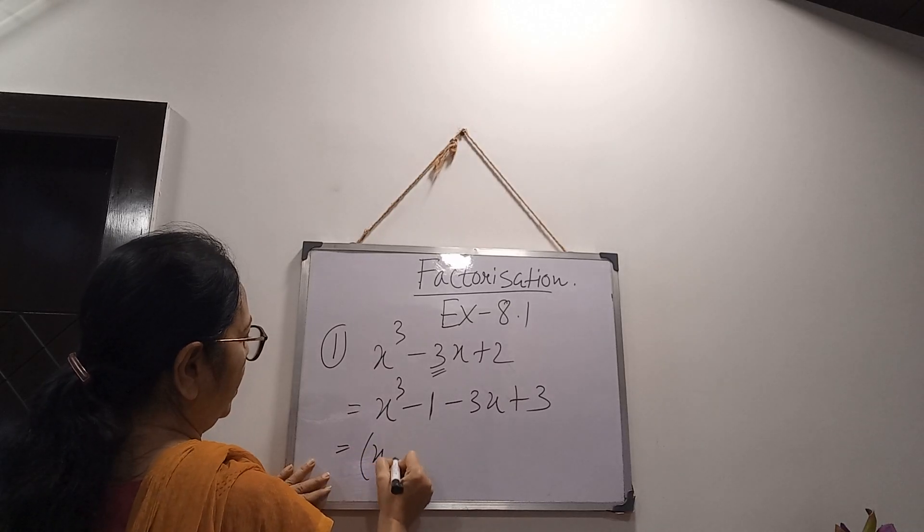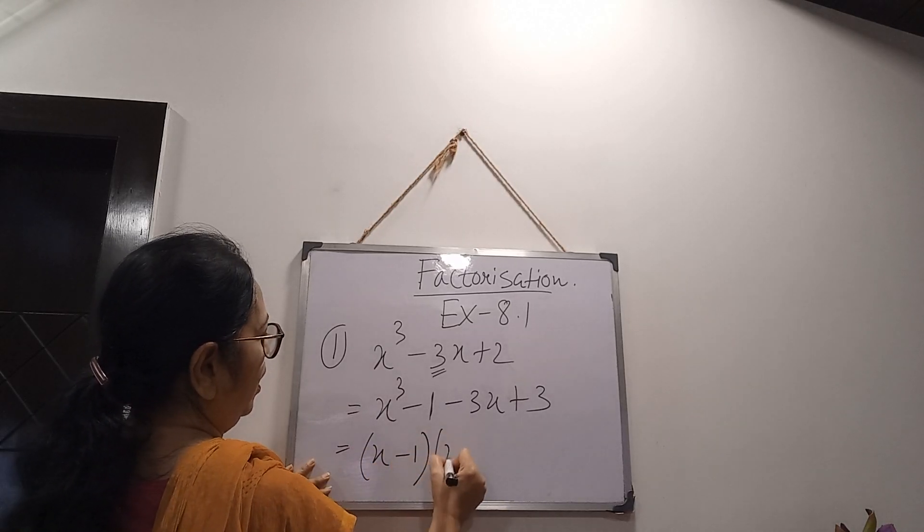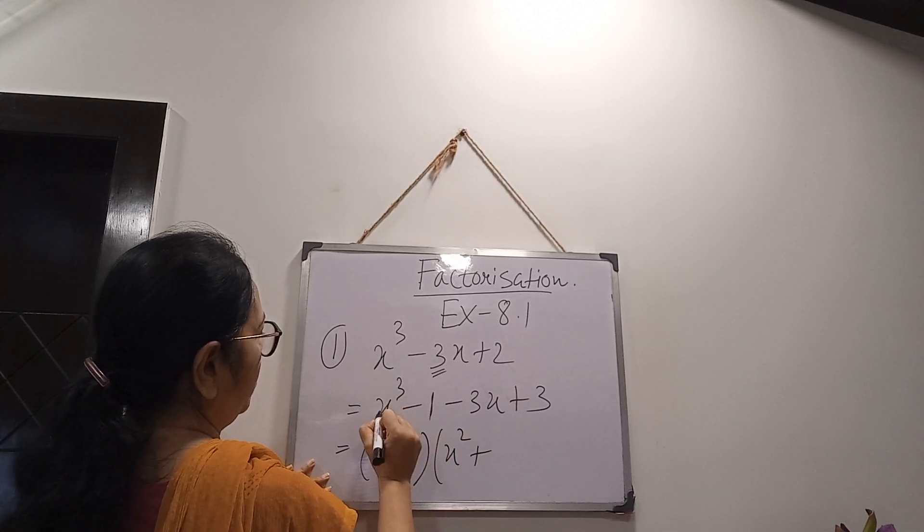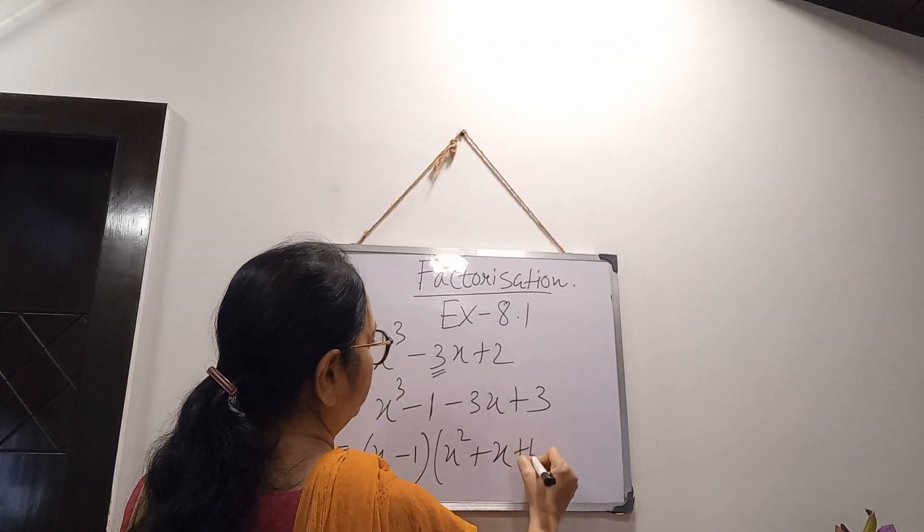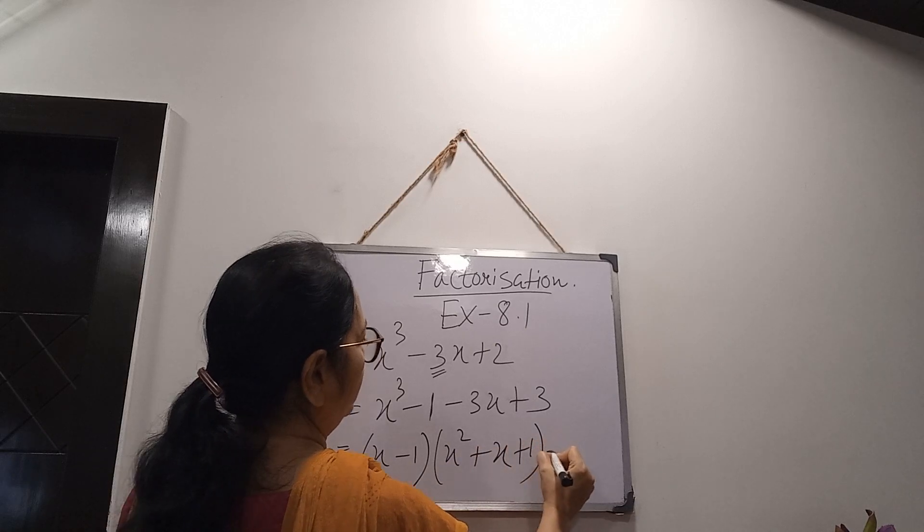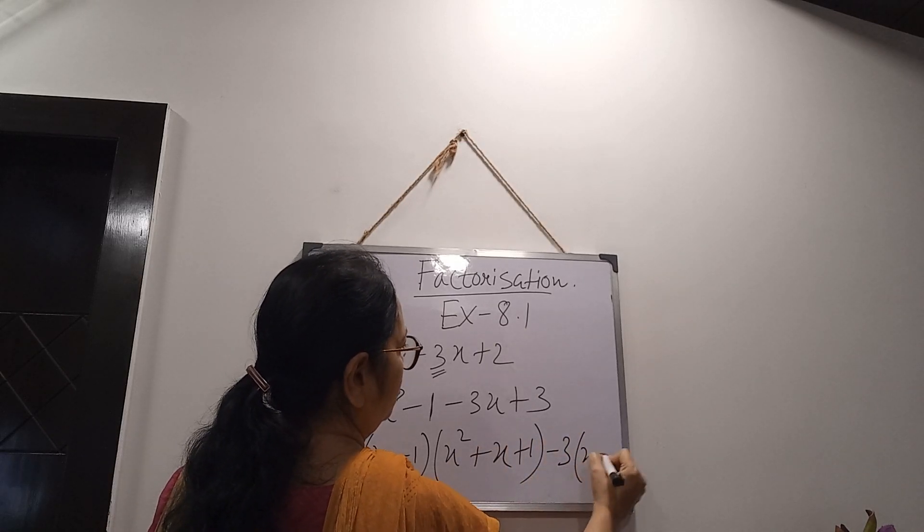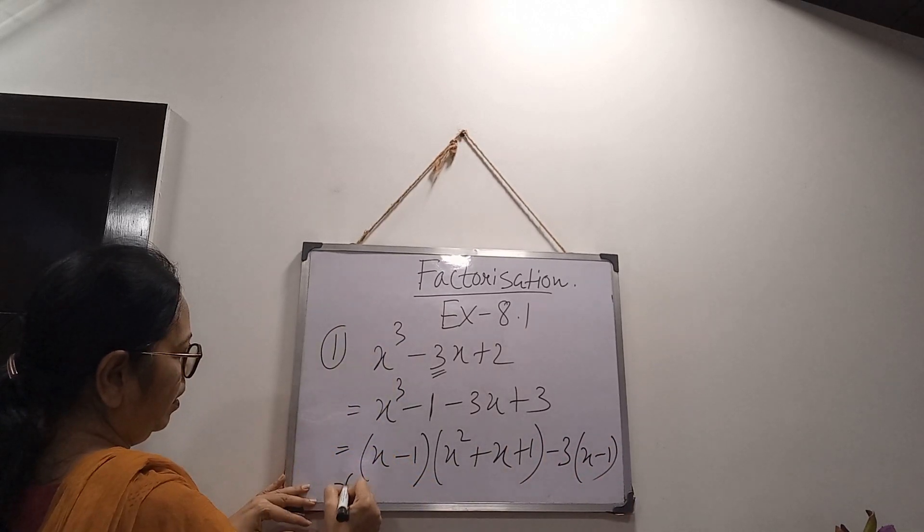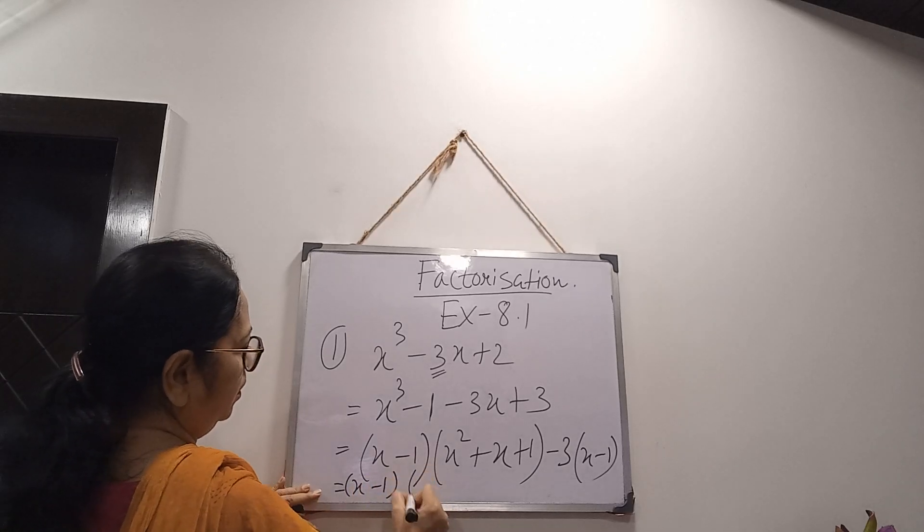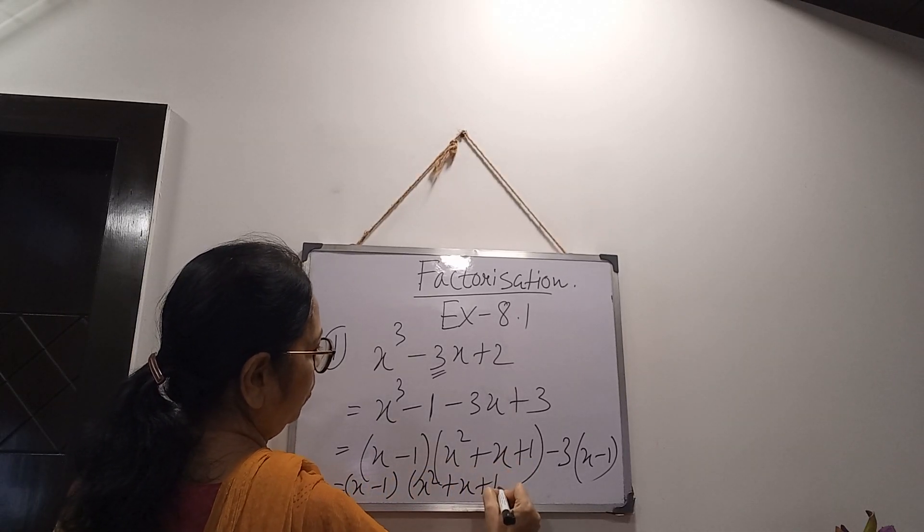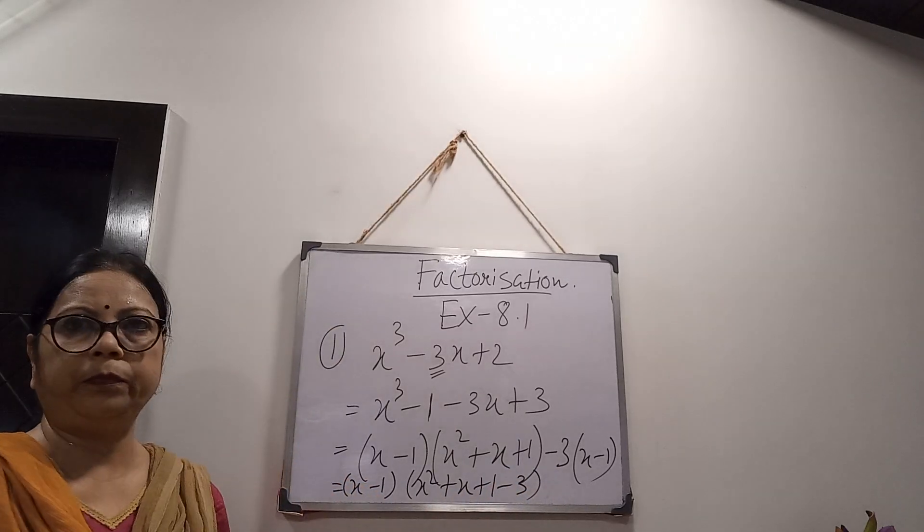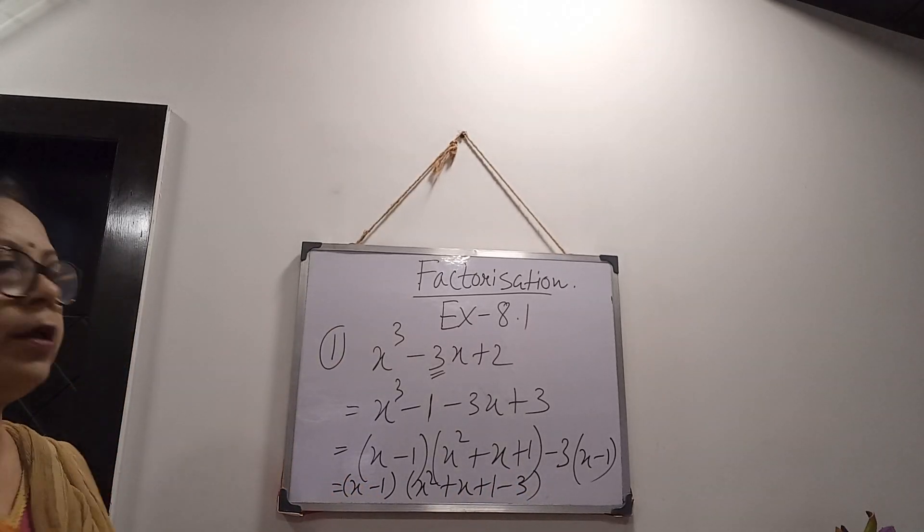Now, a³ - b³ formula: a - b into a² + ab means x into 1, so it is becoming 1 plus b² means 1². So it is 1. Now, minus 3 common. Then x - 1, x² + x + 1 - 3. Then next step.